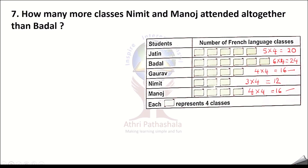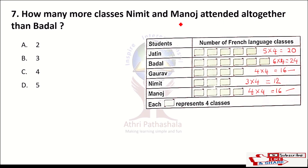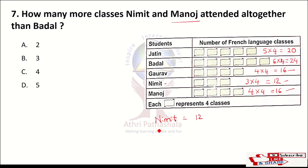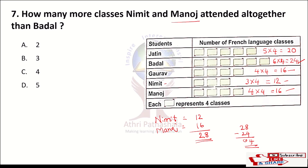Question number 7: how many more classes did Nimith and Manoj attend altogether than Badal? Nimith attended 12 classes and Manoj attended 16 classes, so together they attended 28 classes. Badal attended 24 classes. 28 minus 24 equals 4. They attended 4 more classes. Option C is the correct answer.